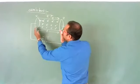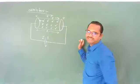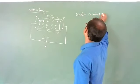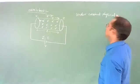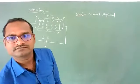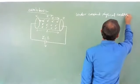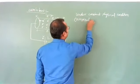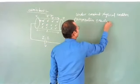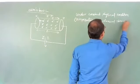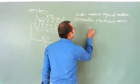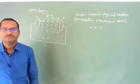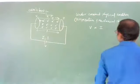Between the potential difference applied across the conductor and the current flowing through it, there is a relation. Under constant physical conditions — temperature and mechanical strain remaining constant — the potential difference across the two ends of the current-carrying wire is directly proportional to the amount of current flowing through it. This is the statement of Ohm's law.